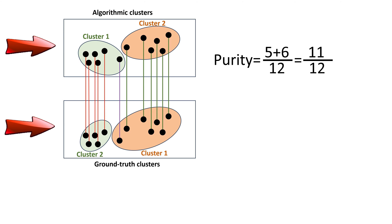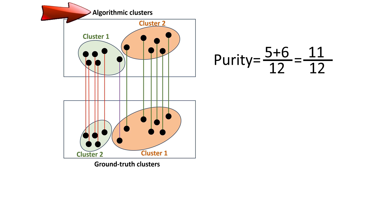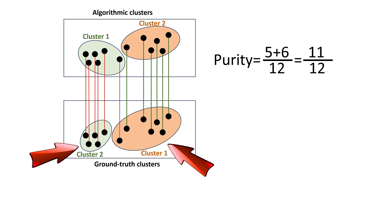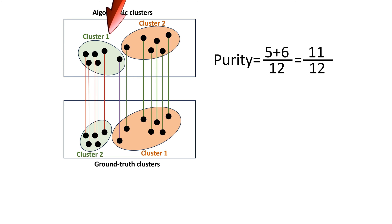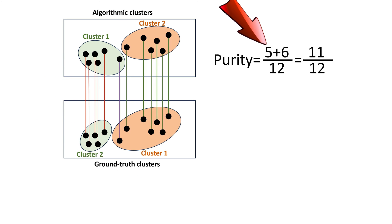The black circles represent the data points. The top box has the clustering result of an algorithm — let's say it created cluster 1 and cluster 2. The ground truth says the points are clustered differently: this is cluster 1, and this is cluster 2. The same points in the two boxes are connected by lines for easy reference. Notice that five points of cluster 1 of the algorithm match with cluster 2 of ground truth, and only one point of cluster 1 matches with cluster 1 of ground truth. Hence, we consider cluster 1 of the algorithm is mostly cluster 2 of ground truth — five points are common, so we have five here.